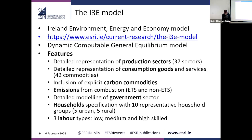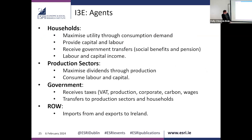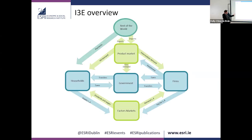In the model, households maximize utility through consumption demand and provide labour and capital to production sectors, receiving wages and dividends in return, plus government transfers such as social benefits, pensions, and unemployment benefits. Production sectors maximize dividends through production, consuming labour and capital. The government receives many types of taxes — VAT, production taxes, corporate taxes, carbon taxes, wage taxes — and transfers to households and production sectors. A rest-of-world account captures imports and exports.